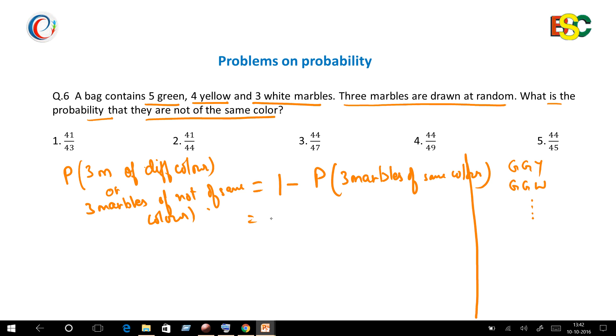So here it becomes 1 minus—now since you will obtain three marbles, the probability of getting three marbles of same color means either you will get three marbles of green color, or yellow, or white.